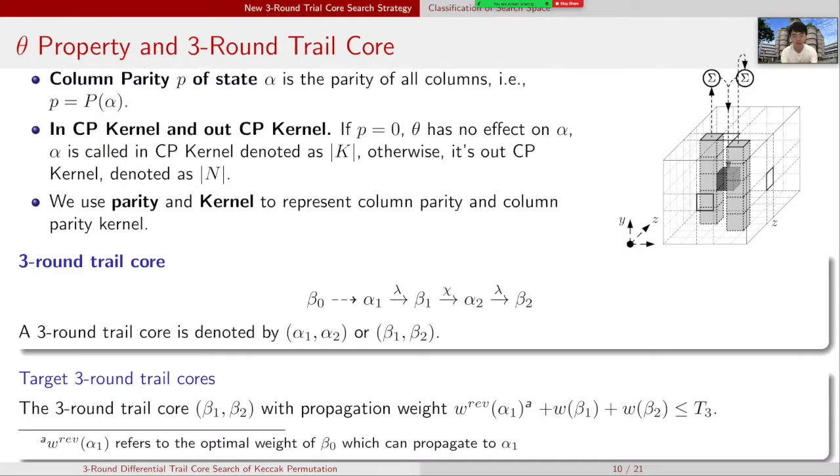Before I introduce our search strategy, I want to show you some definitions first. Column parity P of state α is the parity of all the columns. If P equals to 0, theta has no effect on state α, and α is called in CP kernel, denoted as K. Otherwise, it is out of CP kernel, denoted as N.